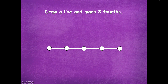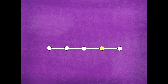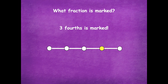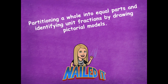Here I have three-fourths: one-fourth, two-fourths, three-fourths. How many equal parts do we have altogether? Four. What fraction is marked? Three-fourths. Great job partitioning the whole into equal parts and identifying those unit fractions by drawing pictorial models.